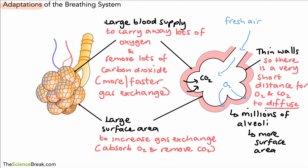So there we have it — these are the main adaptations: a large blood supply, large surface area, thin walls, and the fact that we have many millions of alveoli for more surface area. These are the key adaptations of the breathing system that make it good at gas exchange.